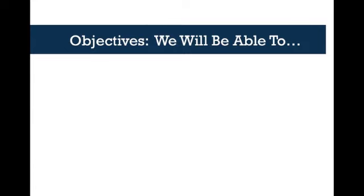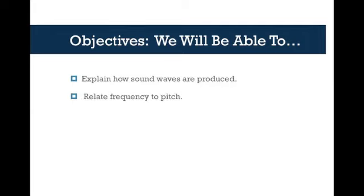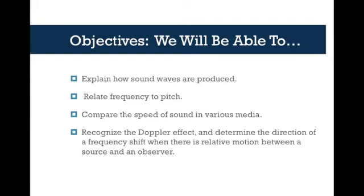You should be able to do these four things: explain how sound waves are produced — where do they come from and how are they made; relate frequency to pitch, connecting what we talked about in the previous chapter to this idea of pitch; compare the speed of sound in various media, like water versus air or metal versus air; and discuss the Doppler effect — determining the direction of a frequency shift when there's relative motion between a source and an observer, basically when something is coming towards you or moving away from you.